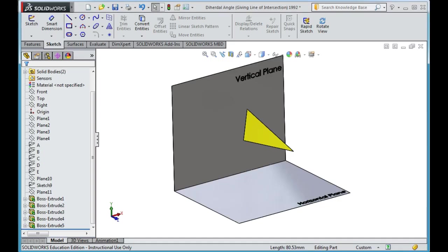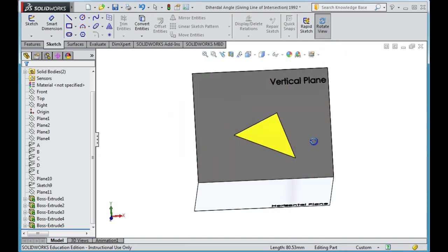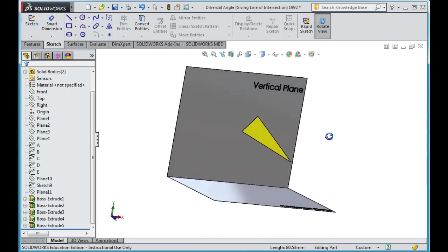So just going to come here to my SolidWorks file. As you can see here we have a plane drawn ABC and we have the vertical plane, the horizontal plane just drawn in for reference as well.